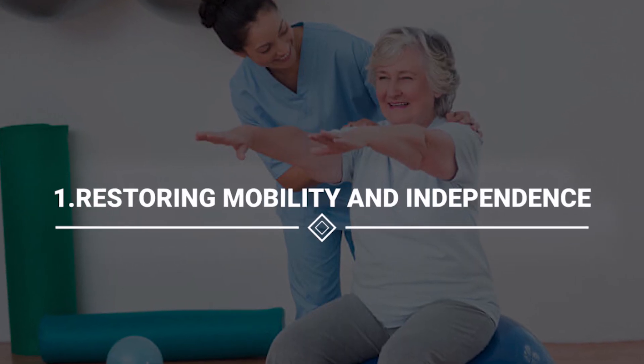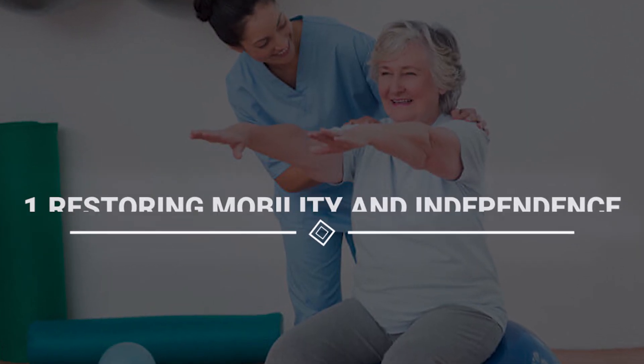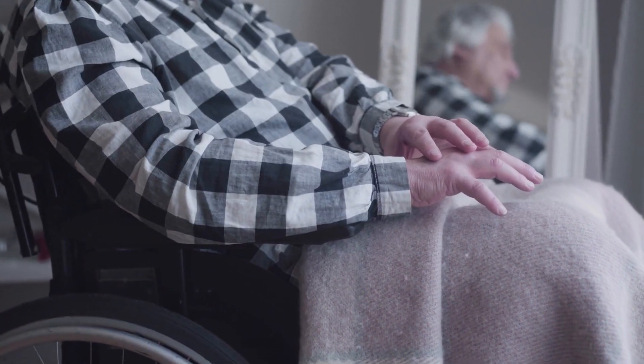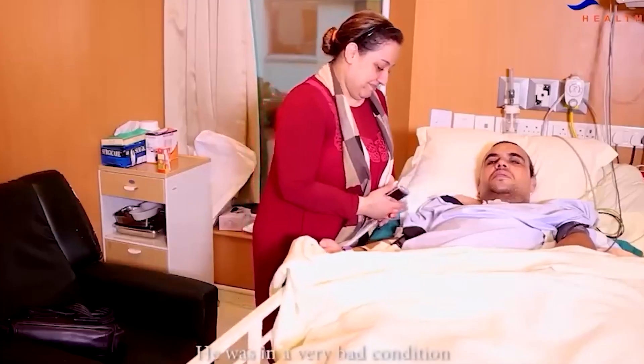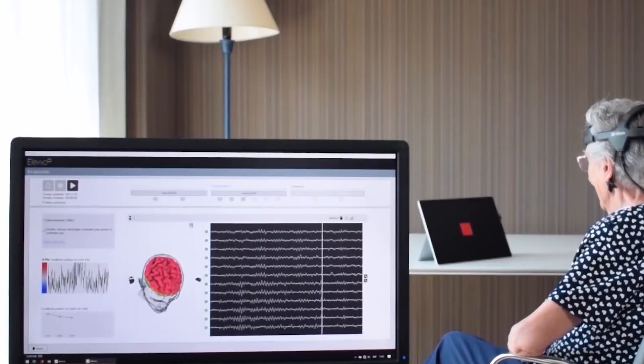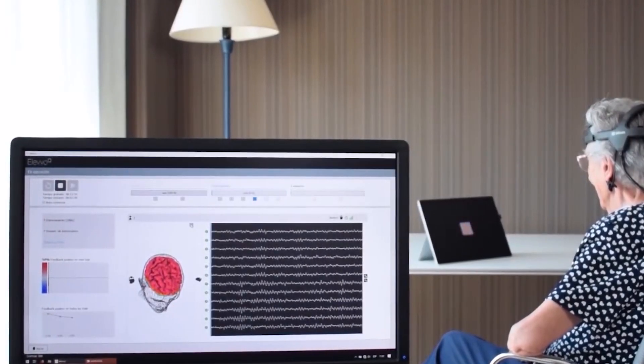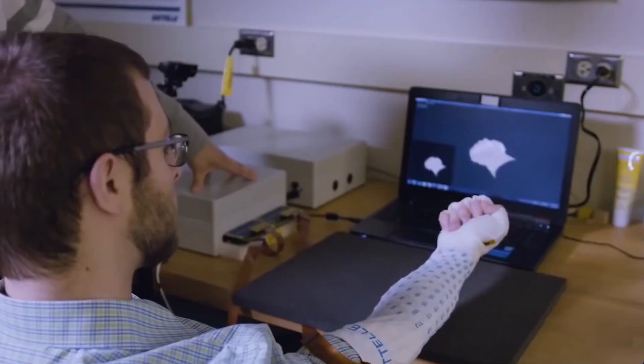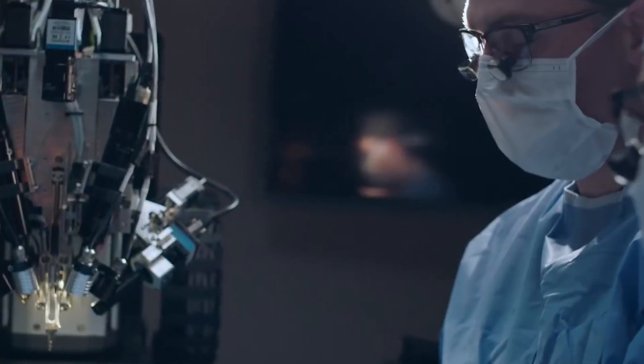1. Restoring Mobility and Independence. Imagine a world where individuals with paralysis or amputations can regain their mobility and independence. Neuralink is pioneering this vision by bridging the gap between the human brain and technology. Through the power of BCIs, individuals could control prosthetics or exoskeletons with nothing but their thoughts. It's a paradigm shift that would empower them to move, interact, and live more freely, ultimately enhancing their quality of life.